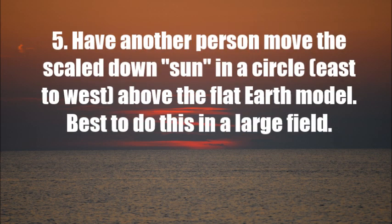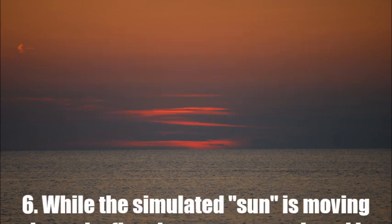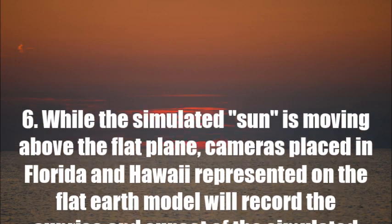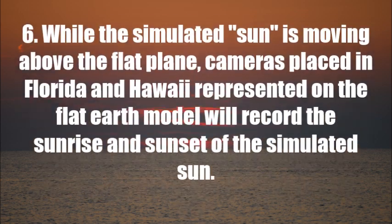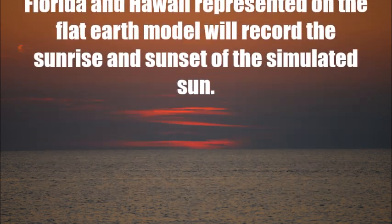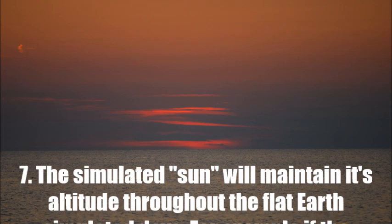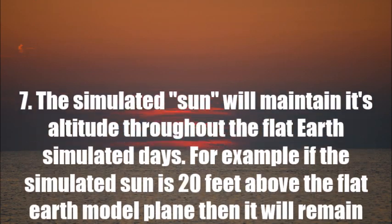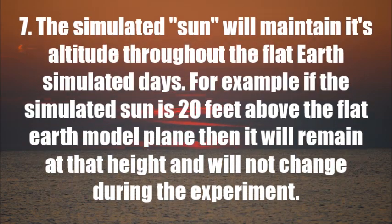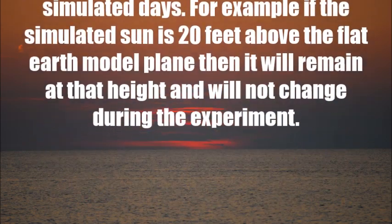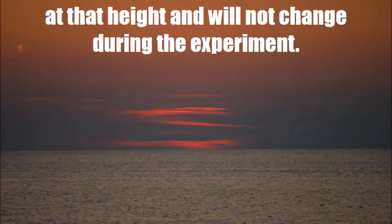Number five: have another person move the scaled down Sun in a circle from east to west above the flat earth model — best to do this in a large field — to simulate the circling of the Sun above the flat plane. Number six: while the simulated Sun is moving, cameras placed in Florida and Hawaii on the flat earth model will record the sunrise and sunset of the simulated Sun. Number seven: the simulated Sun will maintain its altitude throughout the flat earth simulated day — for example, if the simulated Sun is 20 feet above the flat earth model plane, it will remain at that height and will not change during the experiment.